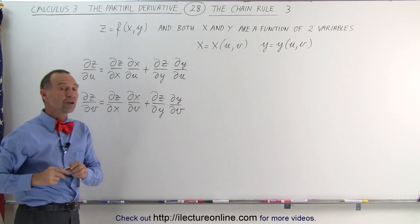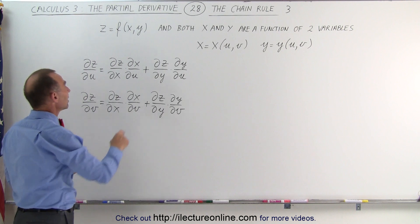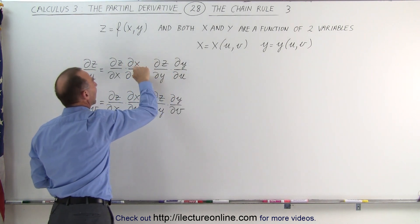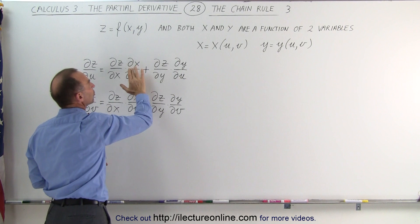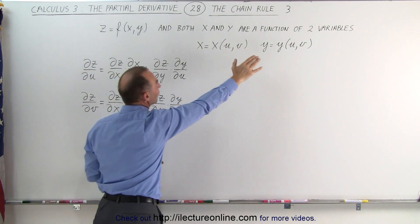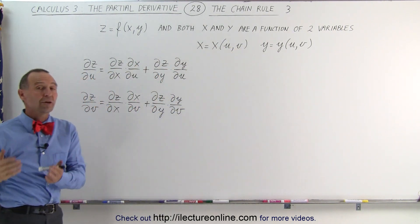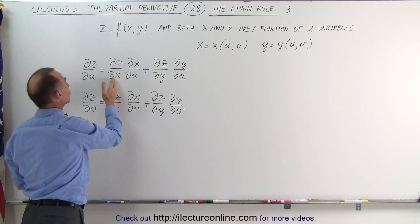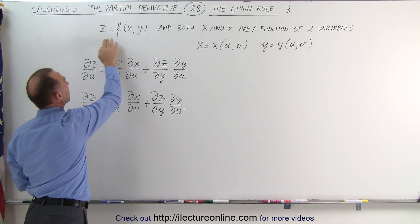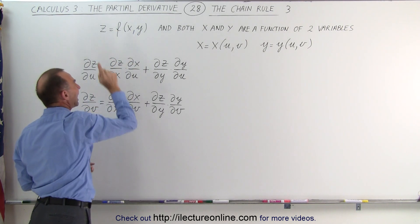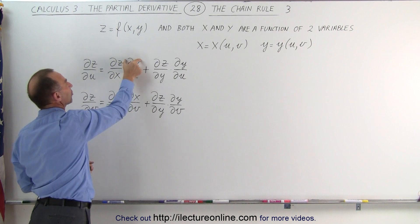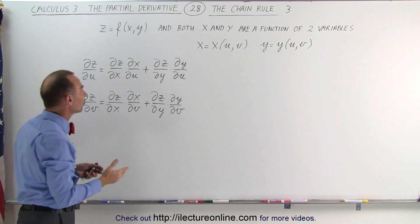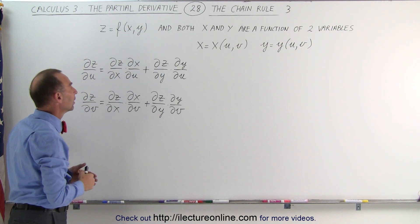Notice what's different compared to the previous examples. Previously we had regular derivatives because x and y were only a function of a single variable. But when x and y are functions of two variables, you need partial derivatives for z — because it is a function of two variables — and also partial derivatives for x and y, because they themselves are functions of two variables as well.